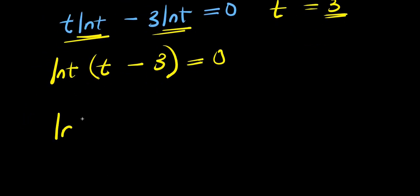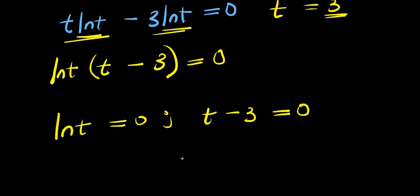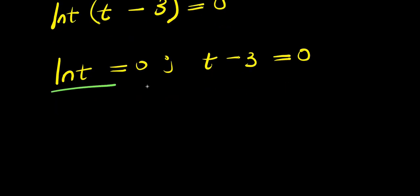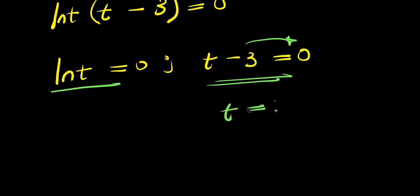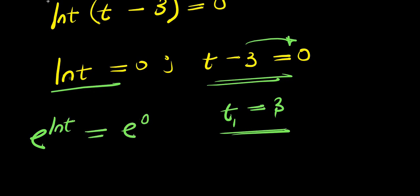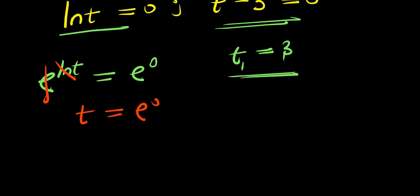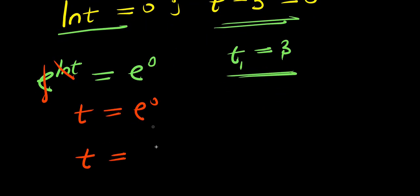So we can equate each factor to zero: ln of t equals zero, and t minus 3 equals zero. For t minus 3 equals zero, move the 3 over — t equals 3, this is our t₁. For ln of t equals zero, raise both sides as exponents of e: e to the power ln of t equals e to the power zero, so t equals 1. This is our t₂.